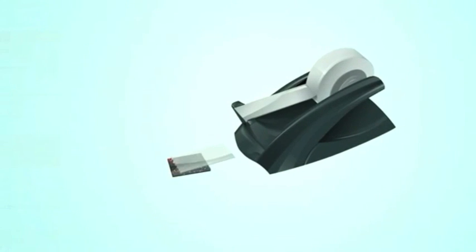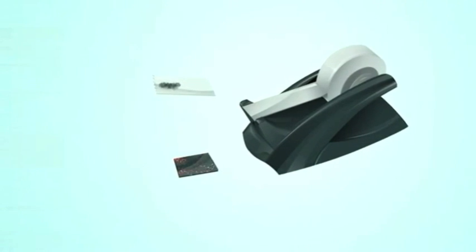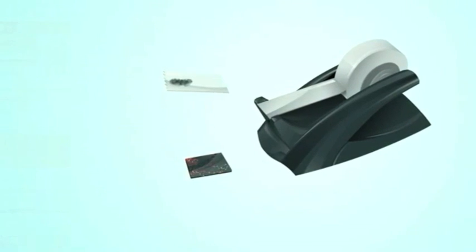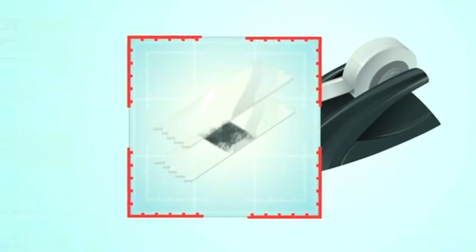Until recently, graphene was difficult and tedious to make. It required separating graphite, which is the three-dimensional form of graphene, by using scotch tape. In 2012,